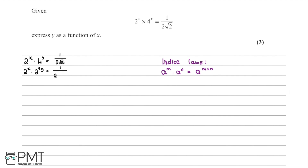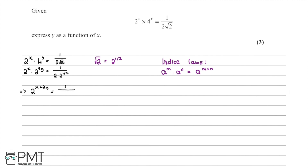We know that root 2 is equal to 2 to the power of a half, so 1 over 2 root 2 becomes 1 over 2 multiplied by 2 to the power of a half. We can then apply the index law to the left hand side, giving us 2 to the power of x plus 2y, equal to 1 divided by 2 to the power of 1 multiplied by 2 to the power of a half, which is 2 to the power of 3 over 2, since 1 plus one half equals 3 over 2.